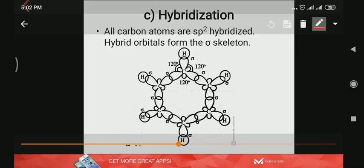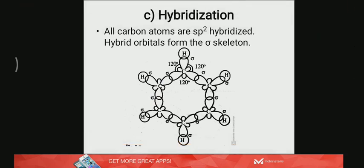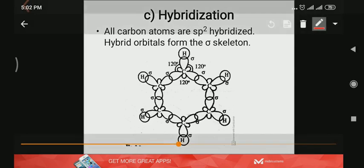Each carbon uses two of the hybrid orbitals to bond with the neighboring two carbon atoms, and the third hybrid orbital is used for overlapping with 1s of hydrogen.